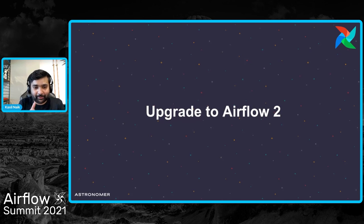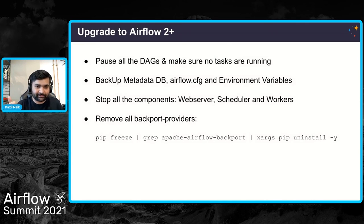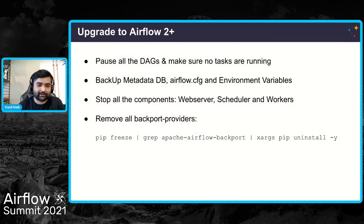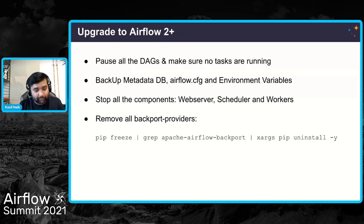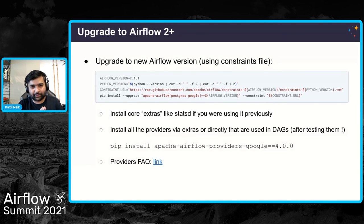Now it's time to actually upgrade to 2.0. First, pause all DAGs and make sure no tasks are running — if tasks are writing to the metadata database while you're running database migrations, it will cause issues and might crash the scheduler. Back up your metadata database and your airflow.cfg. Stop all Airflow components — web server, scheduler, workers. Remove all backport providers you had installed for the migration, because for Airflow 2.0 and above you use providers, not backport providers.